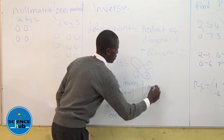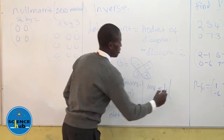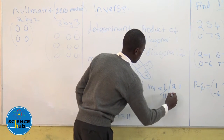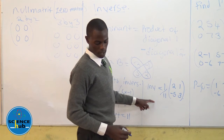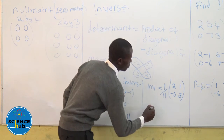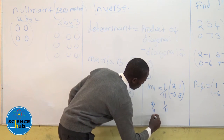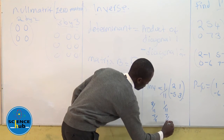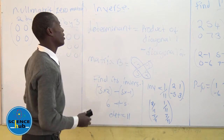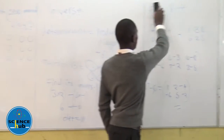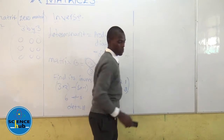Hence its inverse is going to be one over eleven times the adjugate matrix, which will be 2, negative 2, 1, negative 5, giving the inverse as one over eleven times that matrix: 2, negative 1, negative 2, 3.